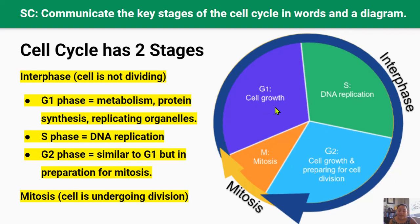Once the cell has replicated its organelles, it needs to replicate its DNA. This brings the cell to the synthesis phase or the S phase of the cell cycle in the interphase. During this phase, the DNA inside the nucleus is replicated to create two identical copies of the genome, so that when the cell divides, each daughter cell will contain one copy of the genome, and the two daughter cells will therefore be genetically identical.